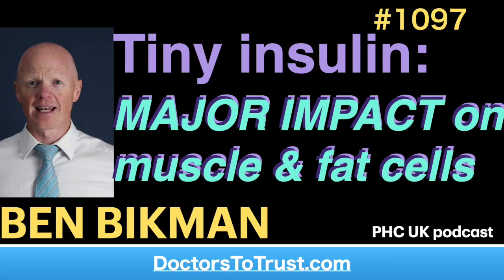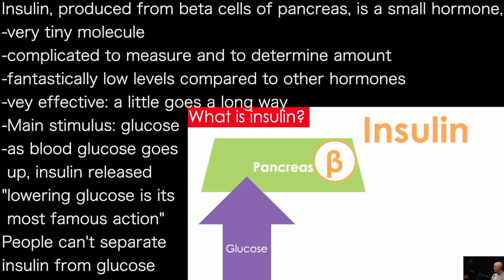Insulin is a hormone produced from the beta cells of the pancreas. Insulin is a small hormone — physically speaking, the molecule is very, very tiny, which made it somewhat complicated for scientists to measure in the past. Also complicating things is the actual amount of insulin we have in our bodies. Insulin is at fantastically low levels compared to other hormones, and yet it is fantastically effective — a little bit of insulin goes a long way. It punches well above its weight class.